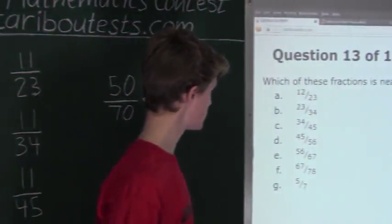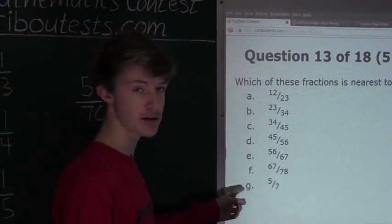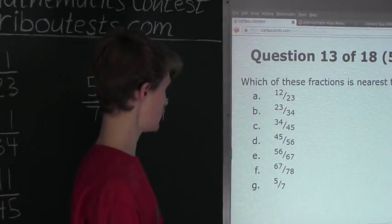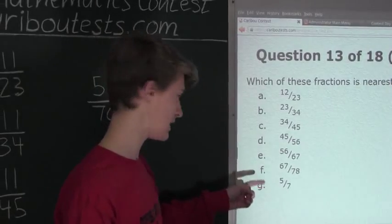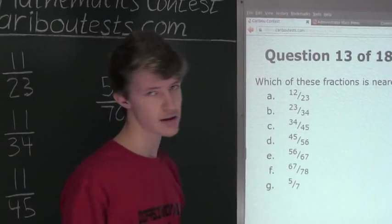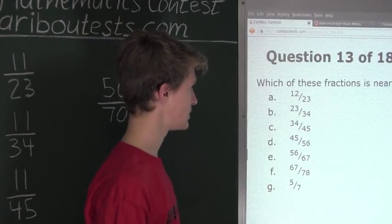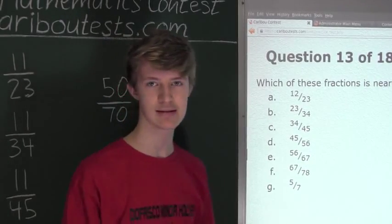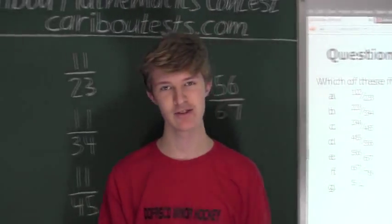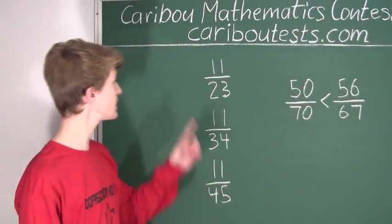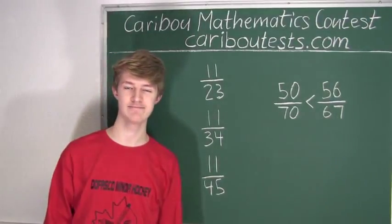If we look at the options, E must be bigger than G, and we already know from earlier that F is bigger than E. Therefore, the biggest fraction and the fraction nearest to 1 is F, 67 over 78. If you'd like to know more about this contest, please visit our website at cariboutests.com. Thank you very much.